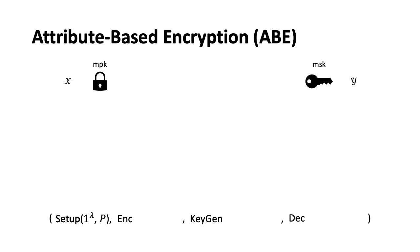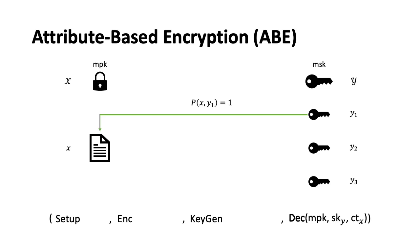Then, the encrypt algorithm encrypts the message M to value X under the master public key, and the key generation algorithm uses the master secret key to derive secret keys to value Y. In the decryption algorithm, these secret keys have the ability to recover the message only if P equals 1, that is, if attribute X satisfies policy Y. For example, if X satisfies Y1, then the secret key can recover the message M. If X does not satisfy Y2 or Y3, then the secret keys cannot obtain any information of the message M, even combining with other secret keys in some way.